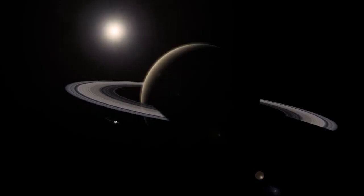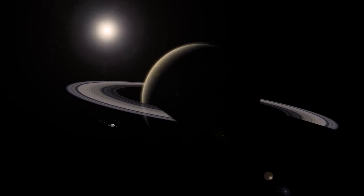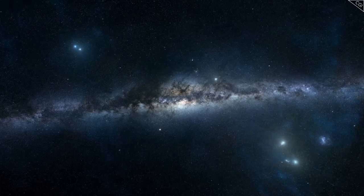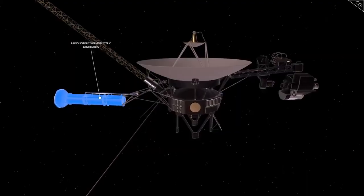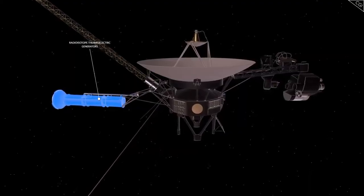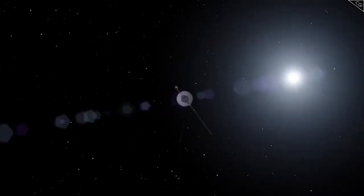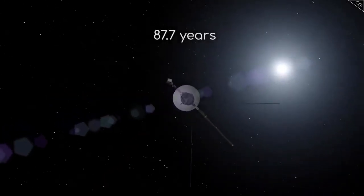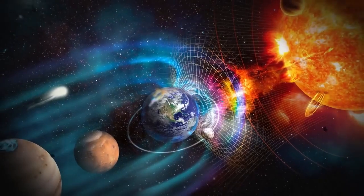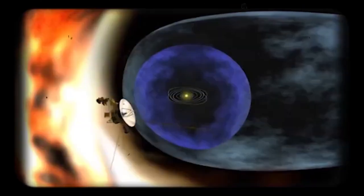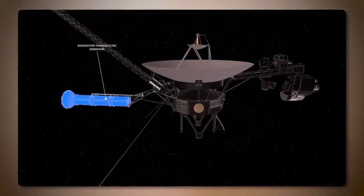Eventually, the solar wind meets the interstellar medium, a region filled with remnants of ancient stellar explosions. Much like oil and water, the solar wind and the interstellar medium don't easily mix, creating a boundary called the heliosphere. This vast bubble, powered by the solar wind, extends roughly 11 billion miles from the Sun, encapsulating the Sun, all eight planets, and a significant portion of the solar system's outer regions.